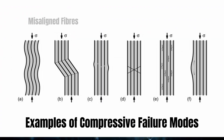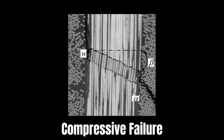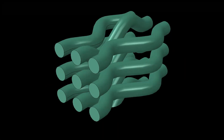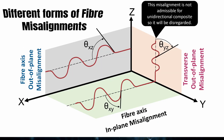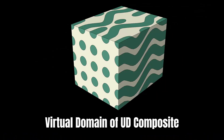Do you know that misaligned fibers are always existent in fiber reinforced composites? In fact, it is the main reason behind compressive failure seen in this type of composites. In this video, I will show you how to set up a model of unidirectional composites with two forms of fiber misalignment and how to create the virtual domain of this model. Let us sit back and relax as we get started with this modeling.